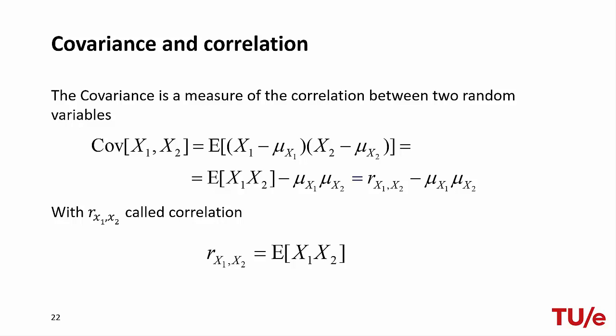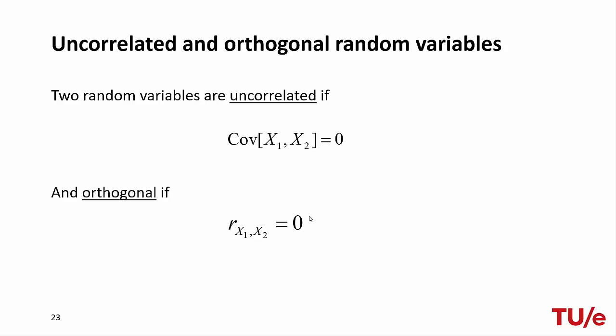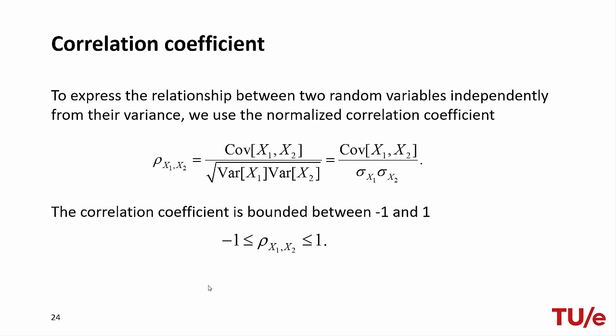The covariance can also be rewritten as the expected value of the product between the two random variables minus the product of their means. The expected value of the product of the two random variables is also known as correlation. Two random variables are said to be uncorrelated when their covariance is 0, while they are said to be orthogonal if their correlation is 0. Another useful statistic is the correlation coefficient, which expresses the correlation between two variables independently of their variance. It is obtained by normalizing the covariance by the standard deviations of the individual random variables, and is always bounded between minus one and one.